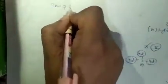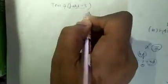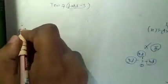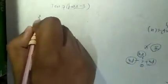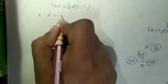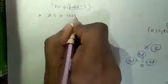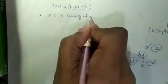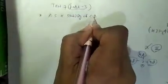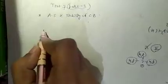In question 31 we are looking for the correct order of acidic strength. Acidic strength is proportional to the stability of the conjugate base after removal of H⁺.